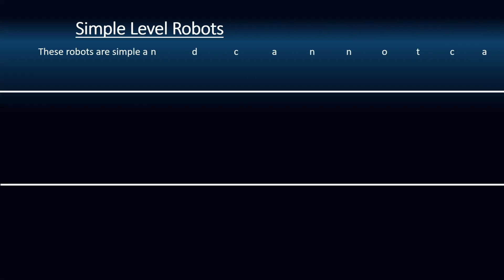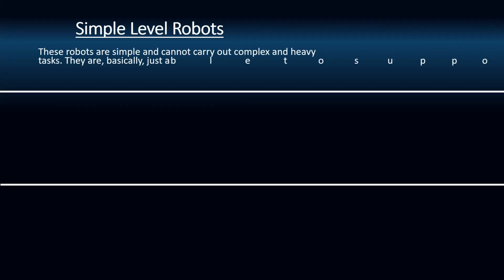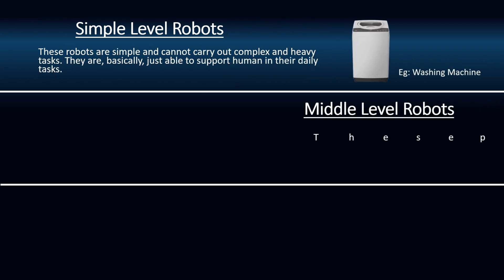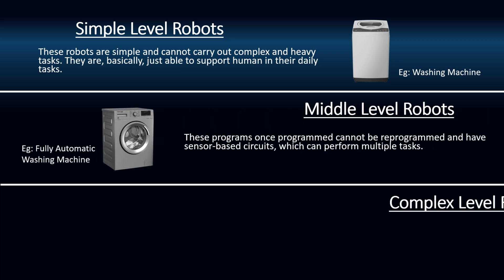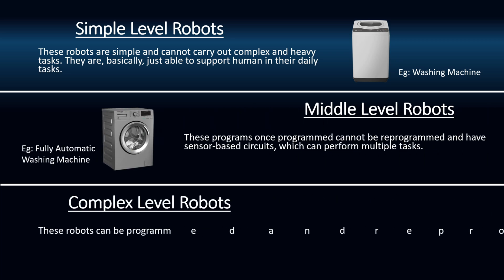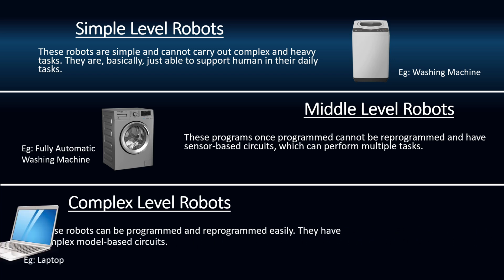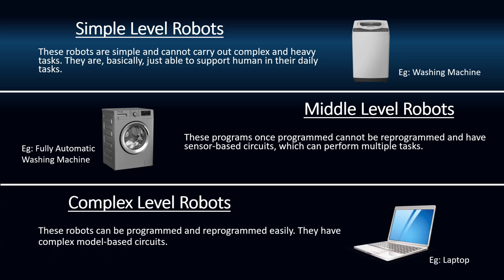Simple level robots cannot carry out complex and heavy tasks and just support humans in their daily tasks. Middle level robots, once programmed, cannot be reprogrammed and have sensor-based circuits. Complex level robots can be programmed and reprogrammed easily and have complex model-based circuits.